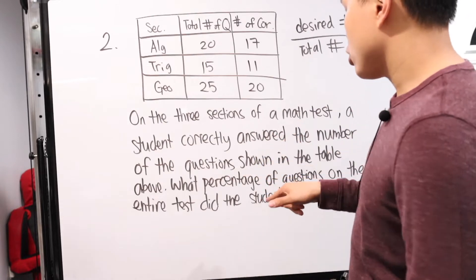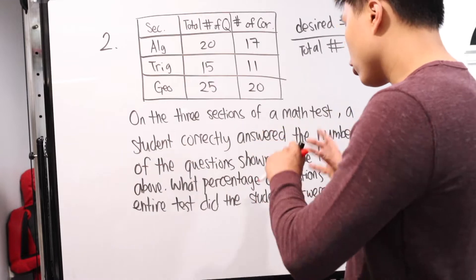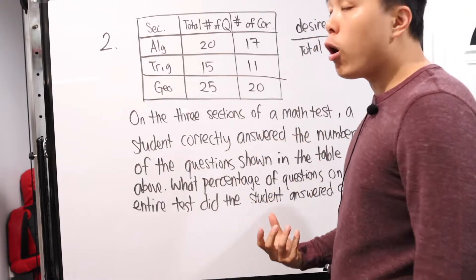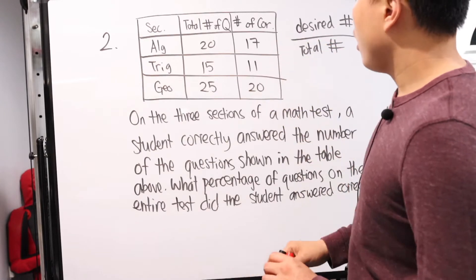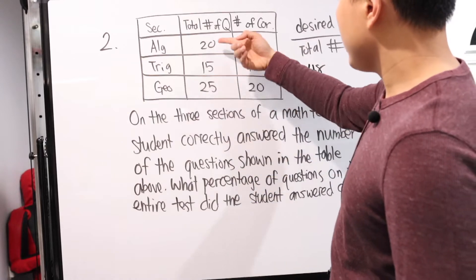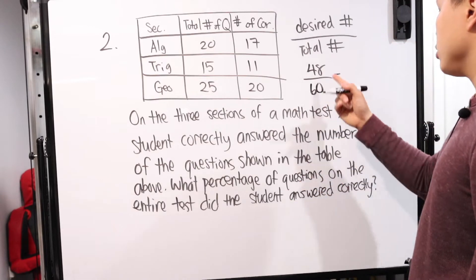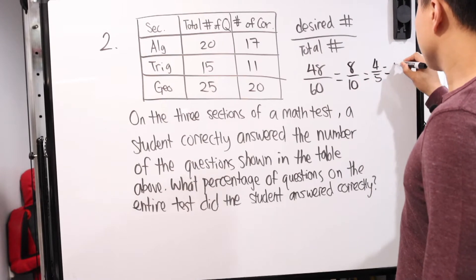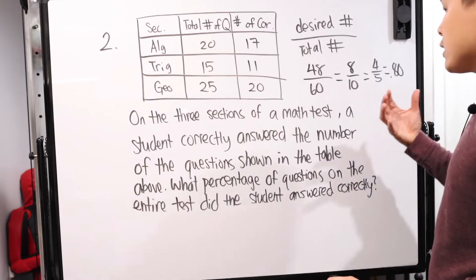Keep in mind that since this is asking about percentage, don't give the answer in decimals — unless the answer choices make it clear. So the desired number is the correct answers, and the total number is the total number of questions. Adding up the correct answers gives us 48; the total questions are 40 and 60. So we have 48 over 100. Simplifying: 8 over 10, then 4 over 5, which is 80% or 0.8. If they ask for decimal, it's 0.8; if they ask for percentage, it's 80%.